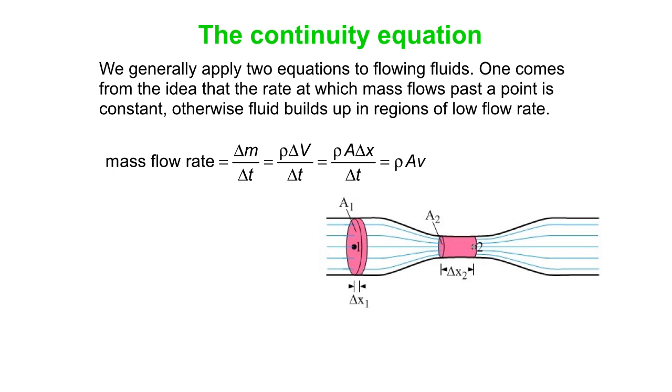So what we can say is that the mass flow rate is ρAv, the density times the area of the tube times the speed. So another way to say that is that at point one we've got ρ₁A₁v₁ has to equal ρ₂A₂v₂.